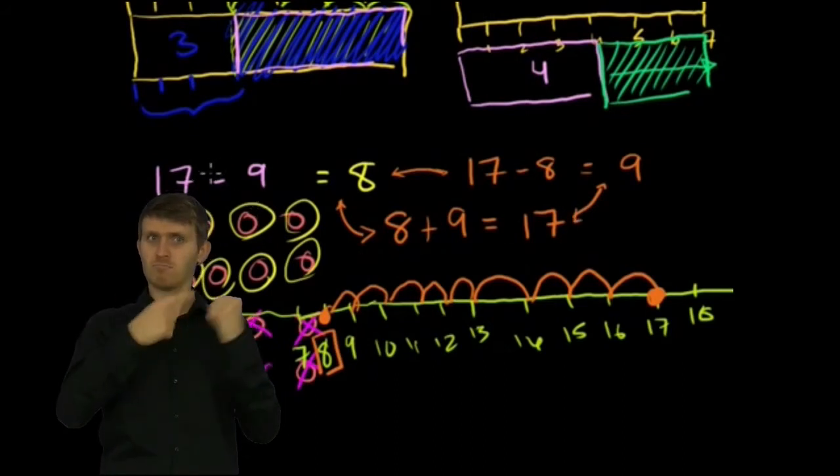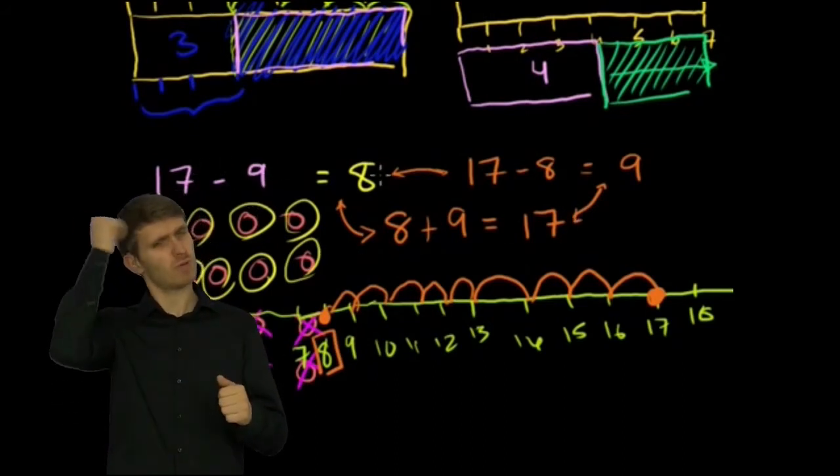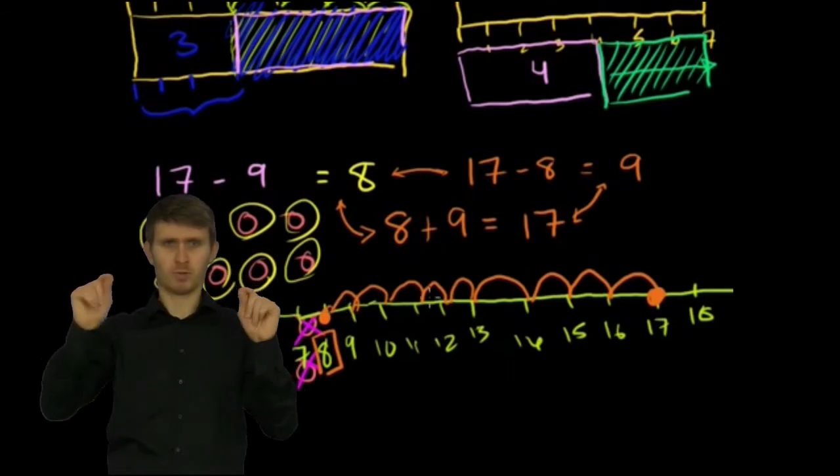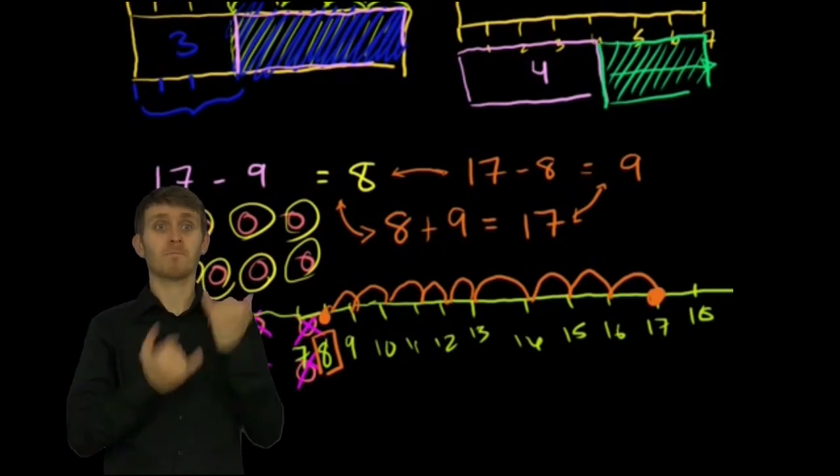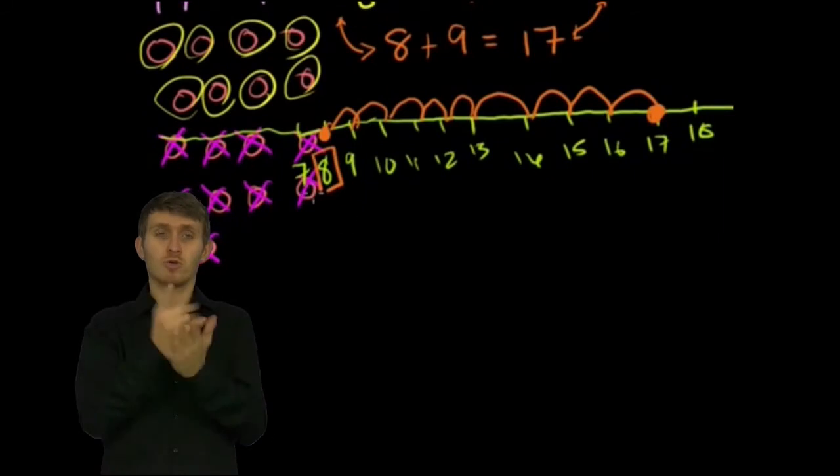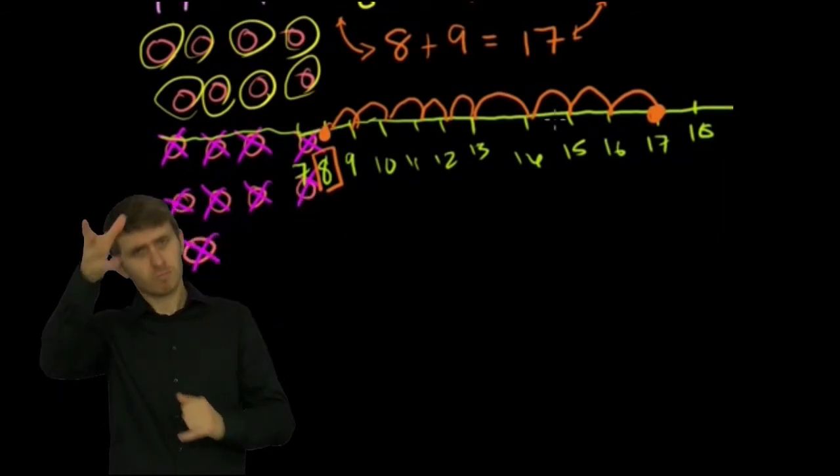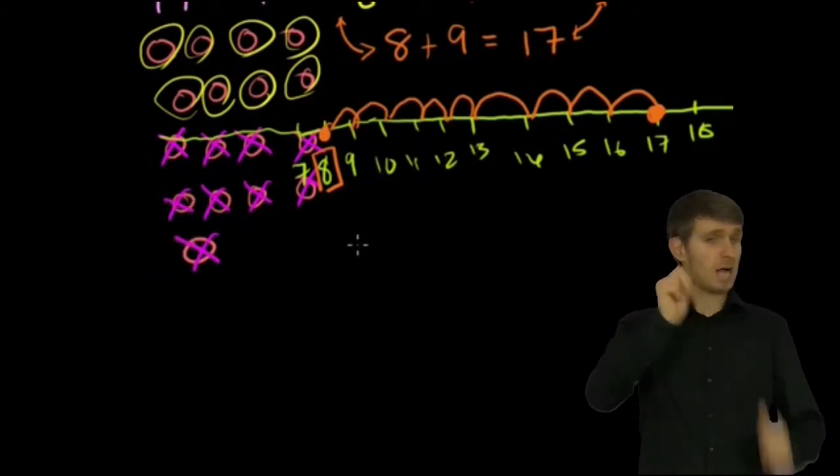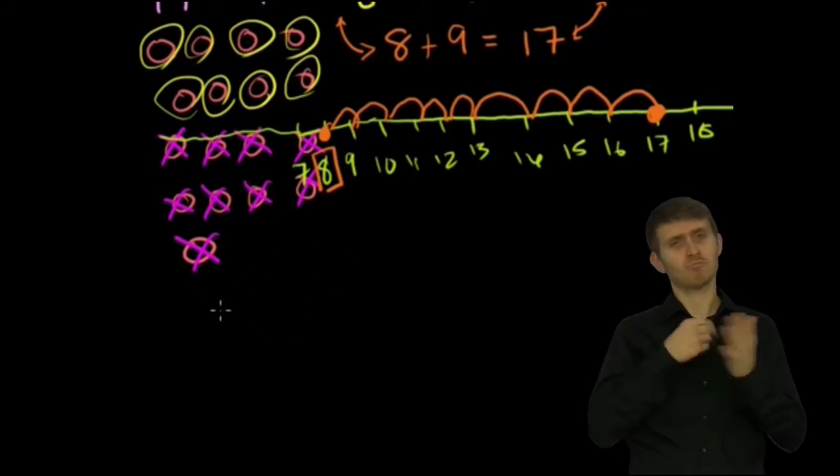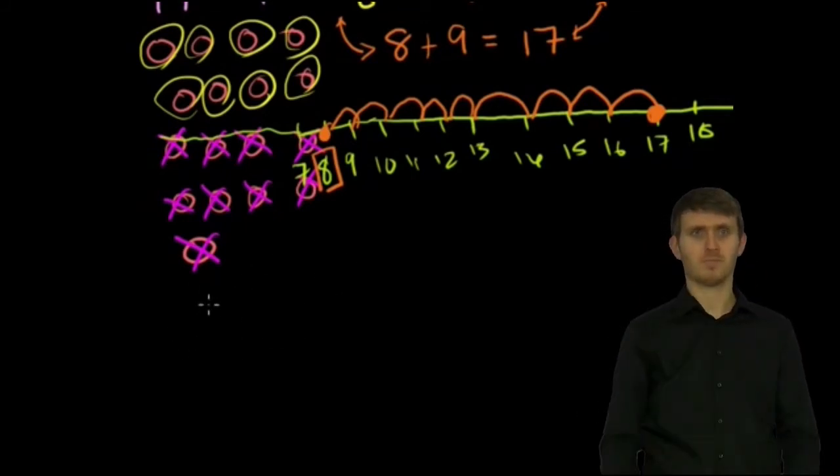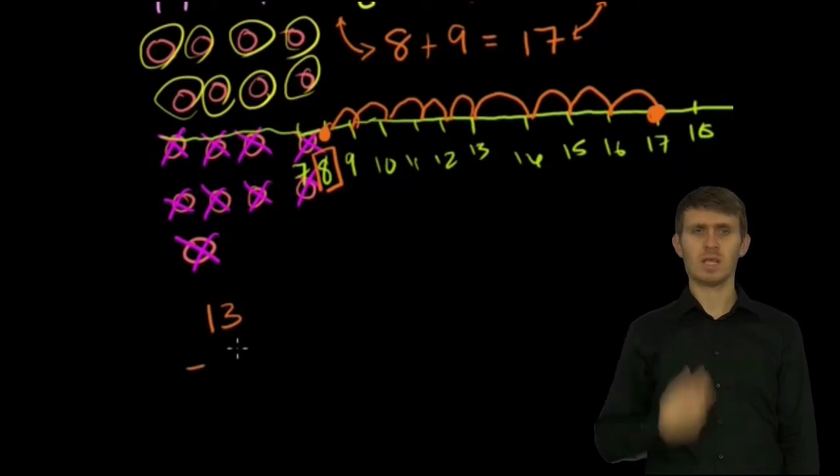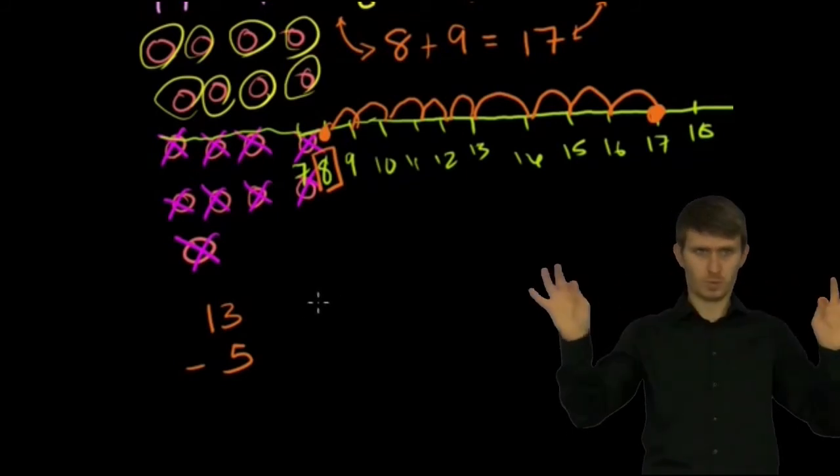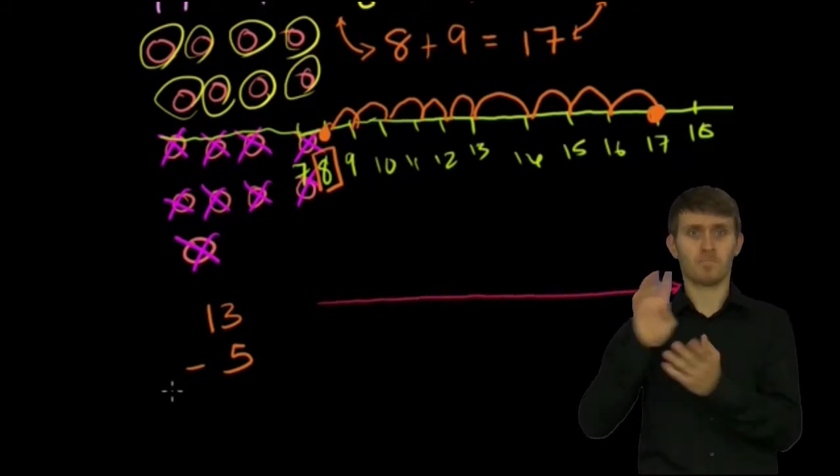So for most of these subtraction problems where the answer is a one-digit answer, you should eventually have them memorized. But in your head, it's good to be imagining this number line. Let's do a couple more of these. And then once we have these memorized, or at least be able to do a number line if we forget, I'll show you how to do any subtraction problem arbitrarily for super large numbers. So let's say we're going to do 13 minus 5. So once again, I'm not going to do the whole circles or the berries this time. I'm just going to draw the number line.